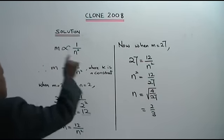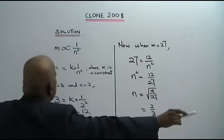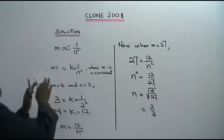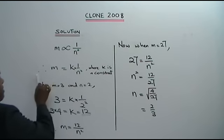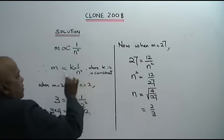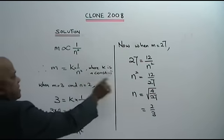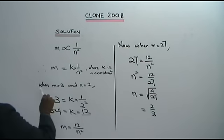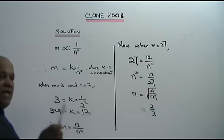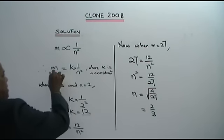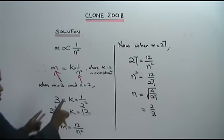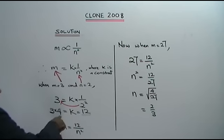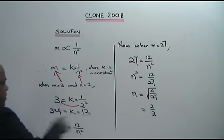You write down M varies inversely as N squared. The next step, the compulsory step, therefore M equals to K times 1 over N squared, where K is a constant. Now we substitute these two values. When M equals to 3 and N equals to 2, we try to find the value of K. M is 3, N is 2. You substitute. 2 squared is 4. You bring it up here and multiply. 3 times 4 equals to K, and what is K? 12.